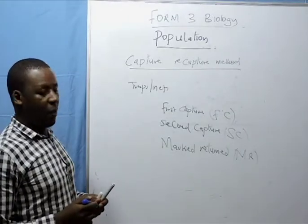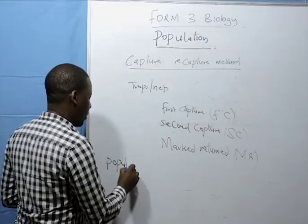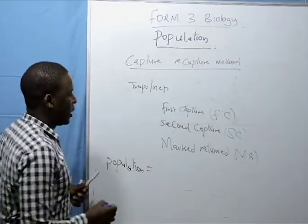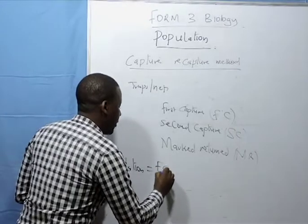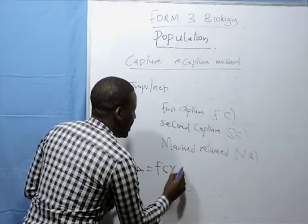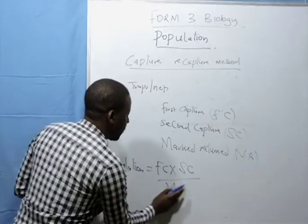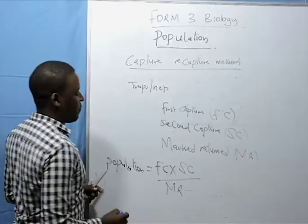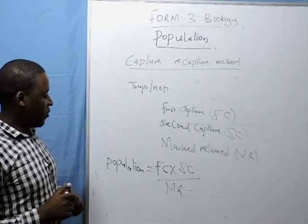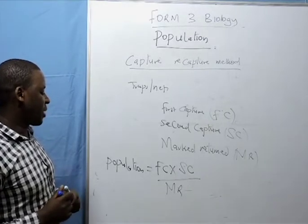So to get a population, very simple method: you do first capture multiply by second capture, divide by marked returned. First capture multiply by second capture, divide by marked returned.